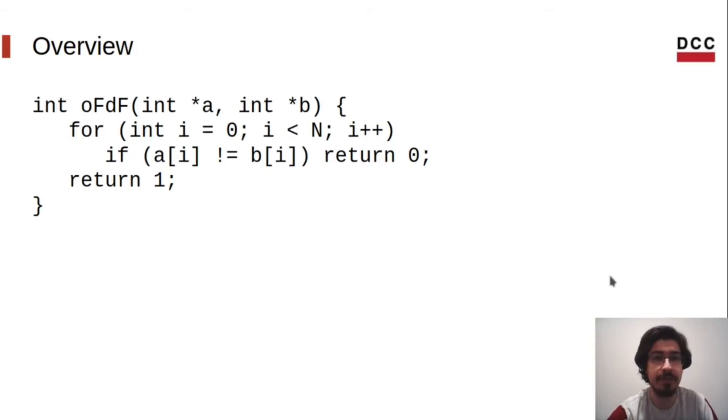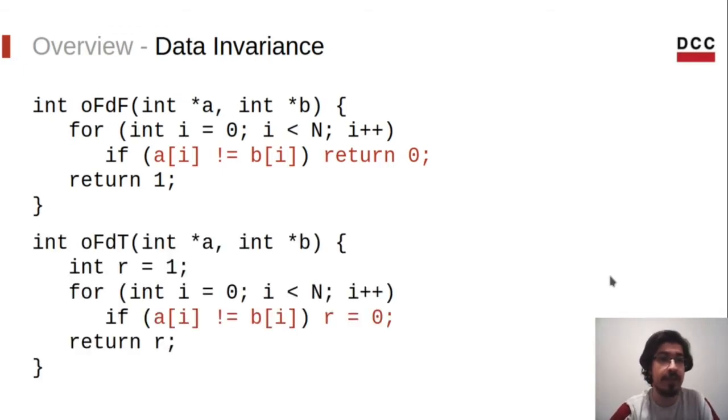Before moving to the transformation, let us see a few properties. First one is data invariance. A program is data invariant if it always accesses the same memory address in the same order regardless of any input. Note that OFDF is not data invariant due to the return statement inside the loop. Here is a modified version that fixes this problem. OFDT is data invariant because it will always access A0, B0, A1, B1, and so on, no matter what the values of A and B are.